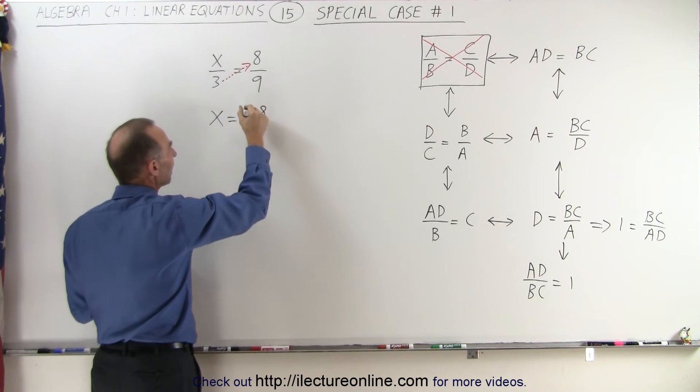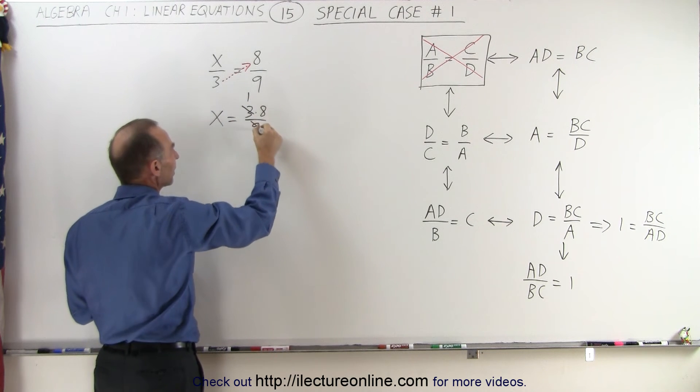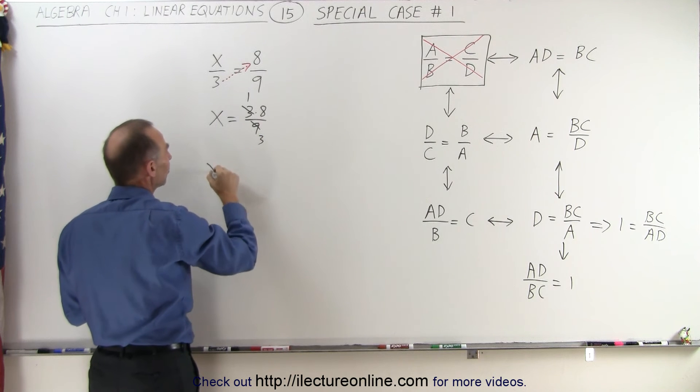And then I realize the 3 and the 9. I can divide the 3 by 3, and the 9 by 3 gives me 3. And so, X is therefore equal to 8 divided by 3.